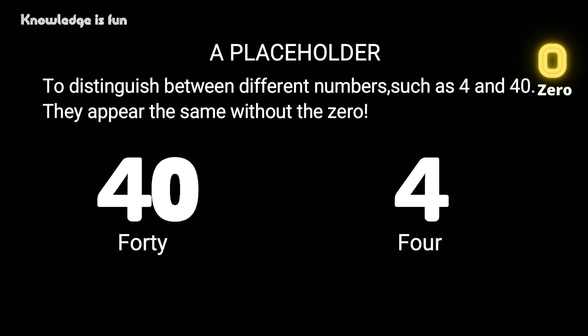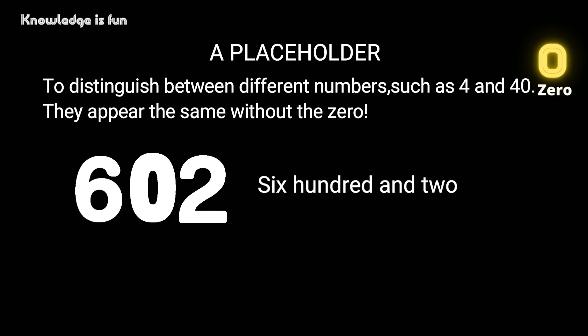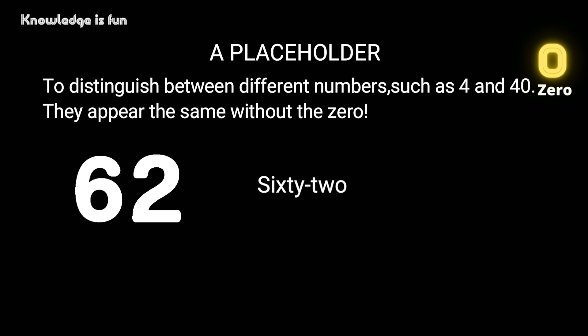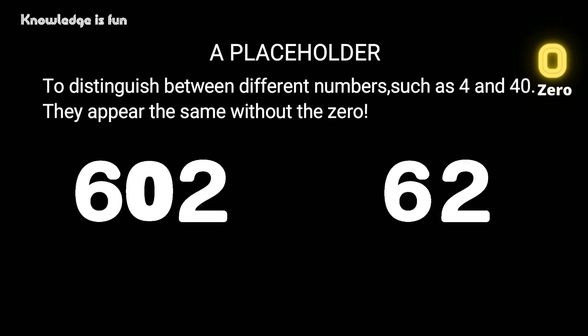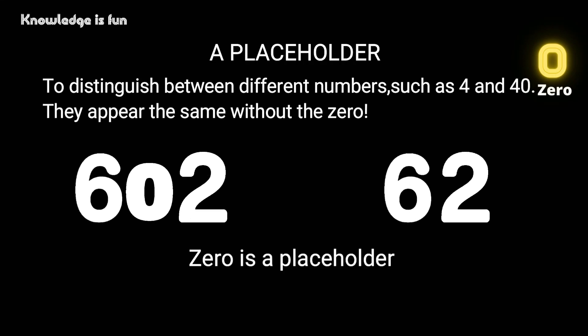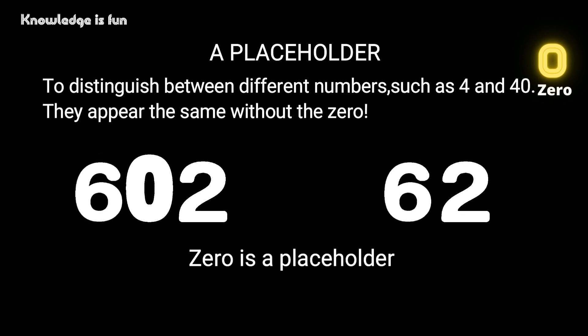The same thing when you have six zero two, and that is pronounced six hundred and two. If you pull the zero out, then you have sixty-two. So in this place it shows that zero is a placeholder. Zero actually makes sense in this place. So when zero is found in the middle of numbers, that zero is a placeholder. It means zero makes sense here.